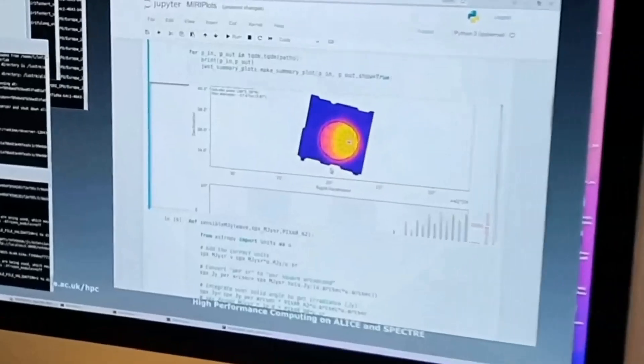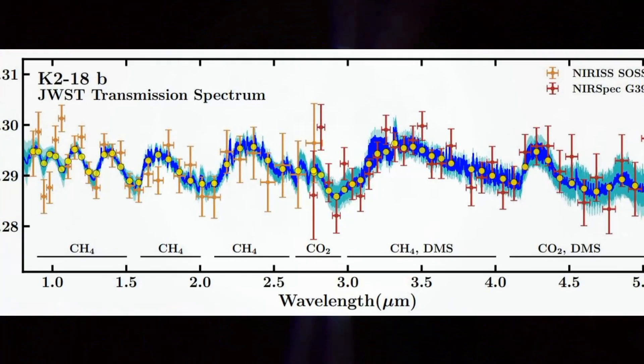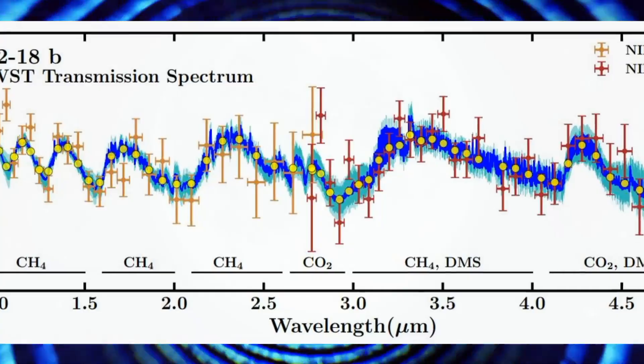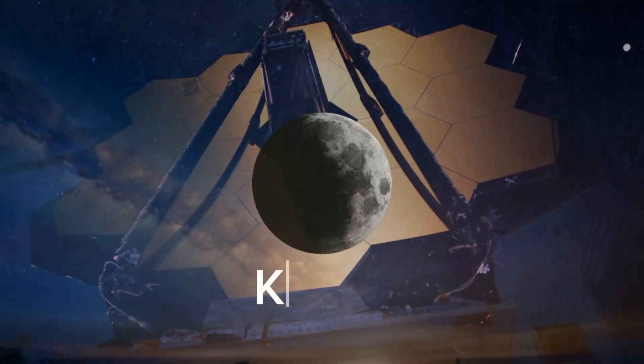First spotted in 2015, K2-18b quickly became the center of attention as the presence of water vapor was detected within its atmosphere.